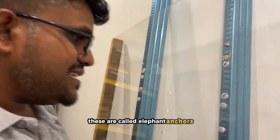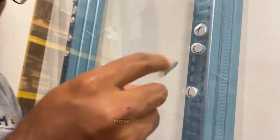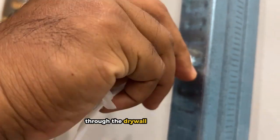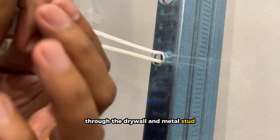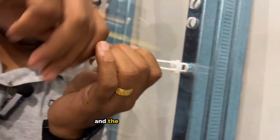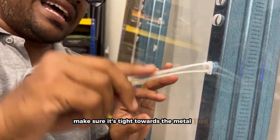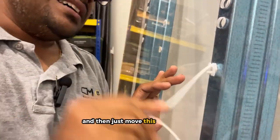So how do we do it? This clip right here - just insert the elephant anchor through the drywall and metal stud like that and then pull this metal clip, I mean the plastic clip right here. Make sure it's tight towards the metal stud and then just move this up and down.